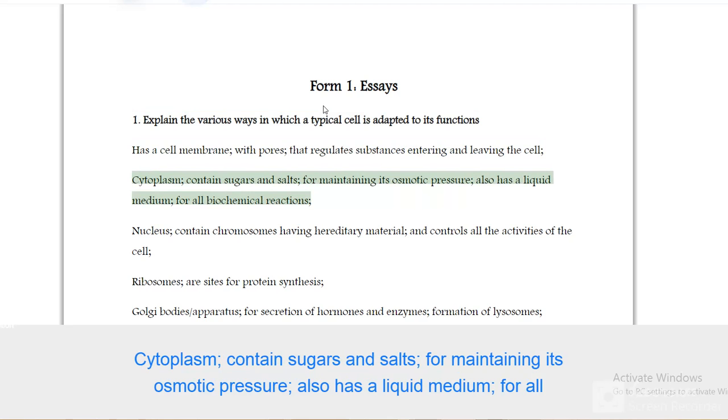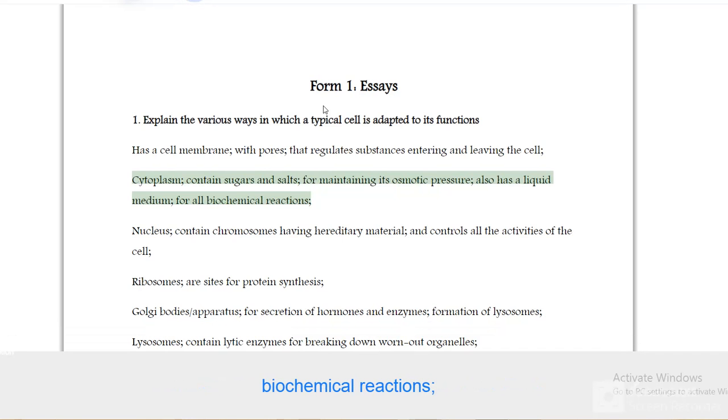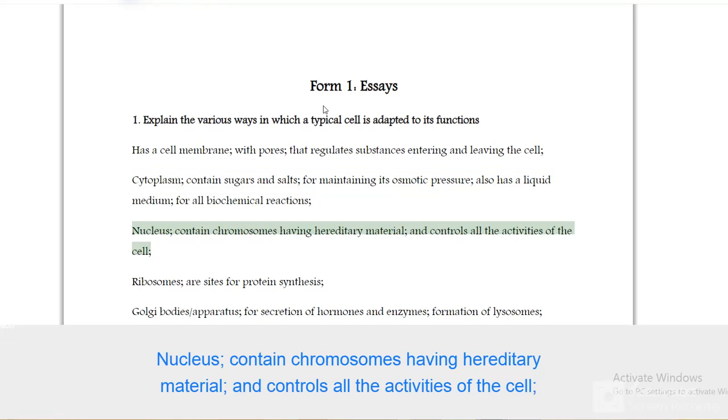Cytoplasm contains sugars and salts for maintaining its osmotic pressure, also has a liquid medium for all biochemical reactions. Nucleus contains chromosomes having hereditary material and controls all the activities of the cell.